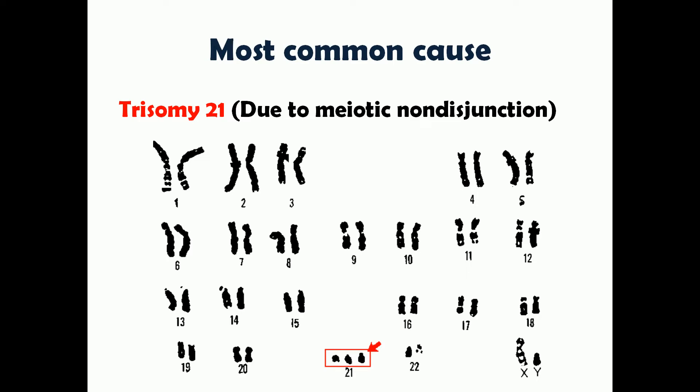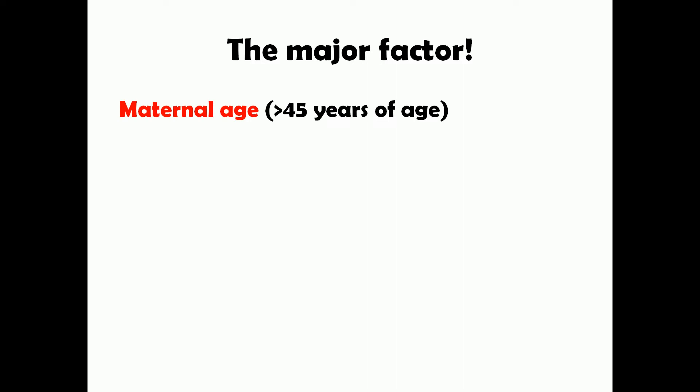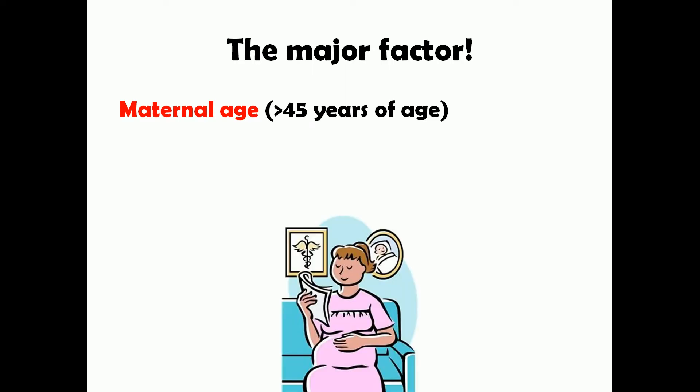The major factor associated with trisomy 21 and Down syndrome is maternal age — the age at which the woman gets pregnant. If a woman gets pregnant at age 45 or older, there is an increased risk of the fetus having Down syndrome. Research has shown that above age 45, the ovum is more prone to undergo meiotic non-disjunction, which is thought to be responsible for this increased risk.